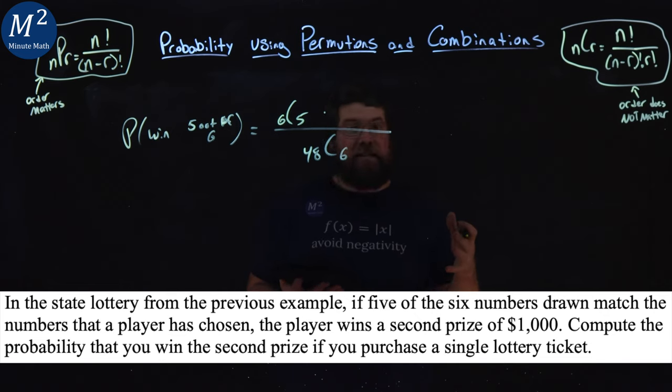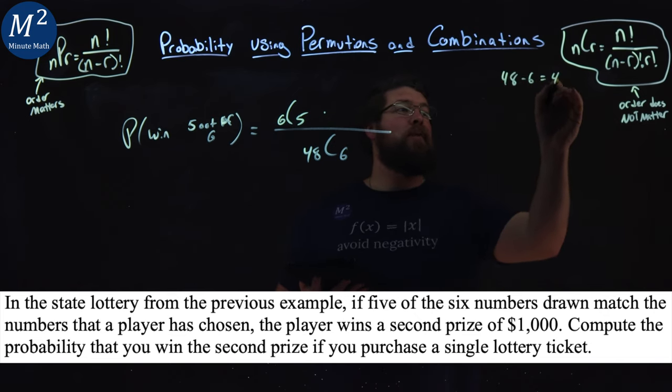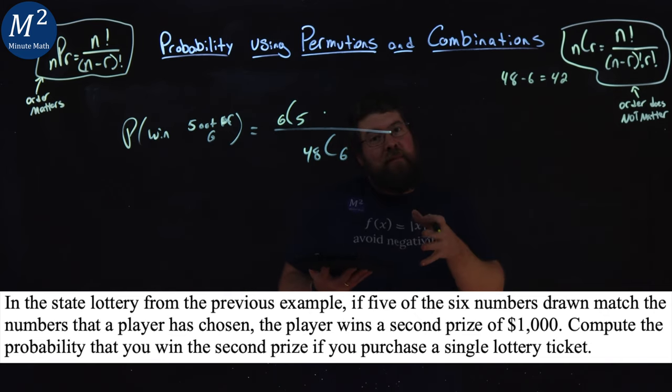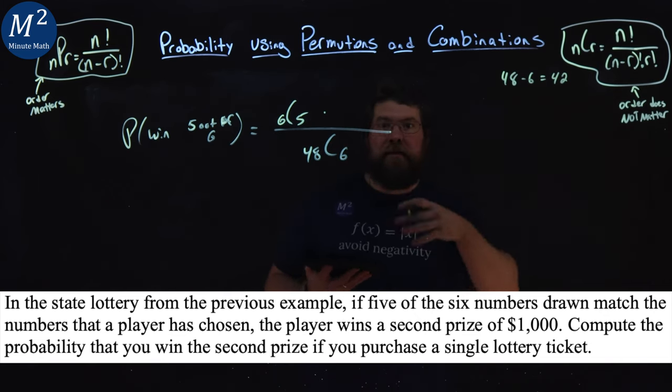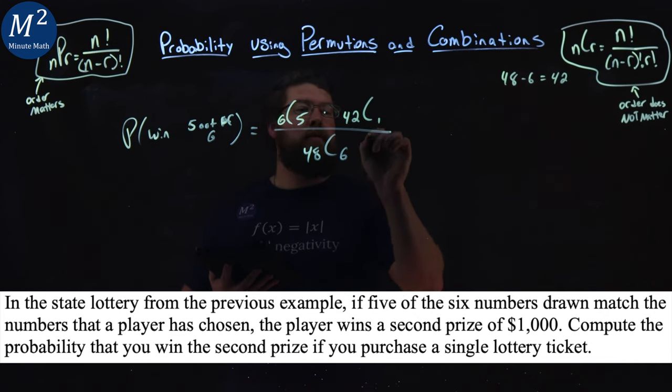And then we're multiplying by the last number, which has to be one of the other numbers that are not in the winning six. 48 minus 6, there's 42 numbers left that we can pull from. And we have to get one of those other numbers. So we have 42 choose 1.